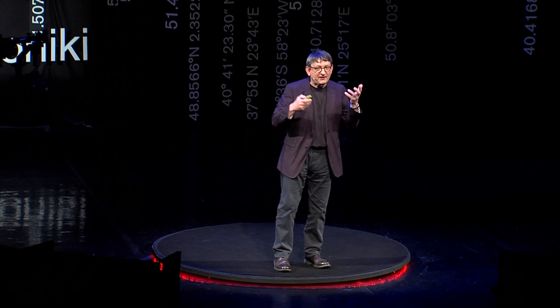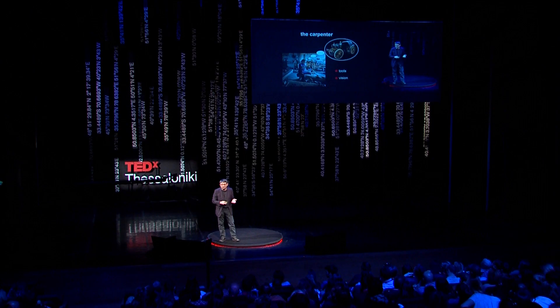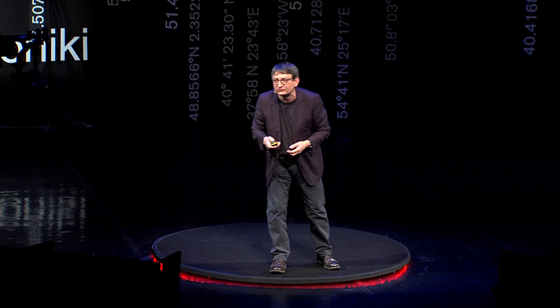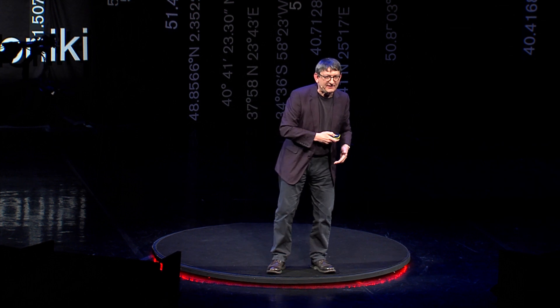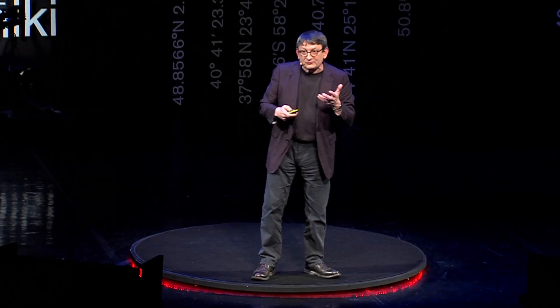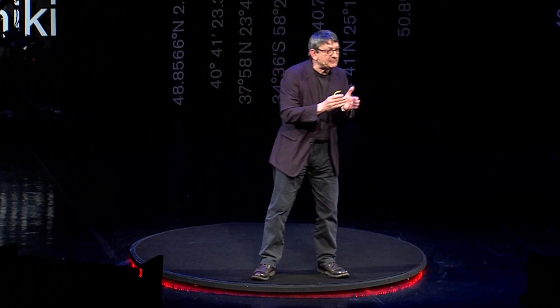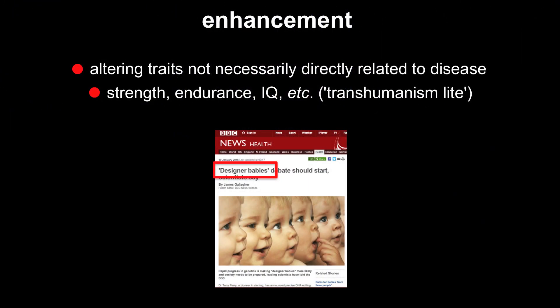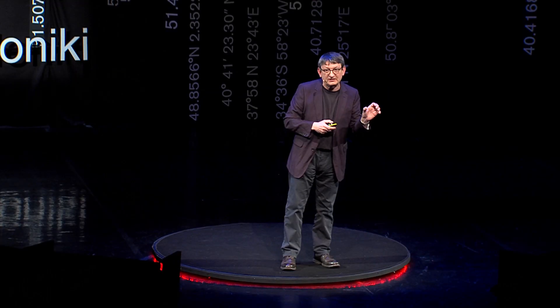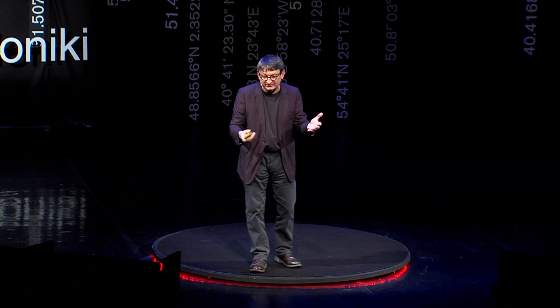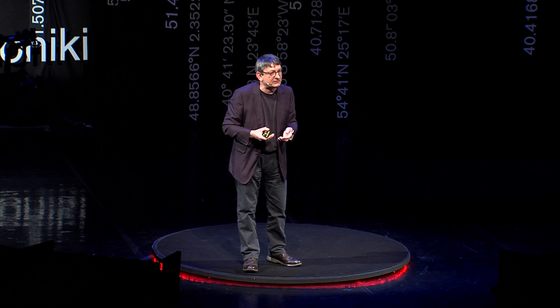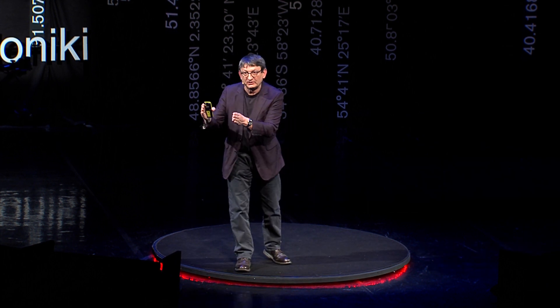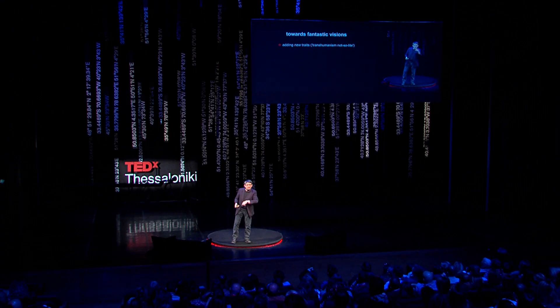Now the carpenter has a fantastic toolkit with which to realise his vision. But his vision and the vision of others might not match Trubshaw's vision — Trubshaw might not be satisfied with repairing disease-predisposing genes. He might want a family of Lara Crofts and Jason Bournes. That brings the idea of enhancement — using genome editing for traits not necessarily directly related to disease, things like strength, endurance, IQ. This is a kind of transhumanism light, introducing the notion of designer babies. There's also transhumanism not so light — much more fantastic — thinking about adding entirely new traits to humans, like giving a child wings.